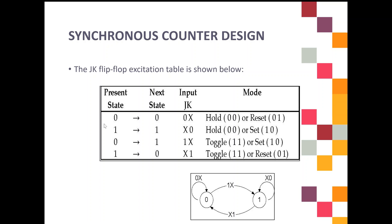The first transition is between present state 0 and next state 0. You need to figure out what the input of J and K must be when your present state is 0 and you remain at next state 0. The second transition is between present state 1 and next state 1 — the first two transitions have the same present and next state values. The remaining transitions are present state 0 to next state 1, and present state 1 to next state 0.